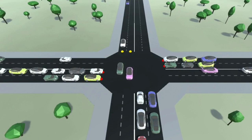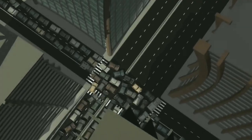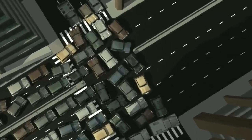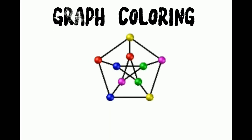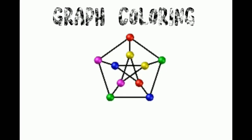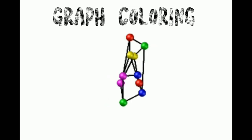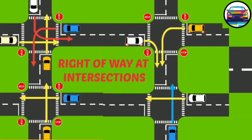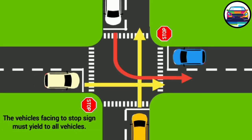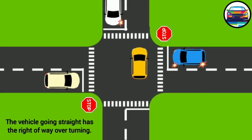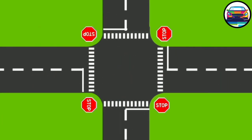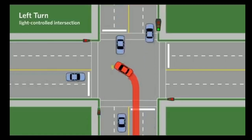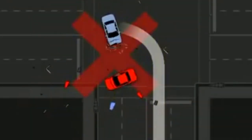In order to efficiently manage the flow of traffic, it is essential to use a technique called graph coloring. Graph coloring is a process of assigning colors to each vertex of a graph in such a way that no two adjacent vertices have the same color. This ensures that the traffic flows smoothly and there are no collisions at the intersections.